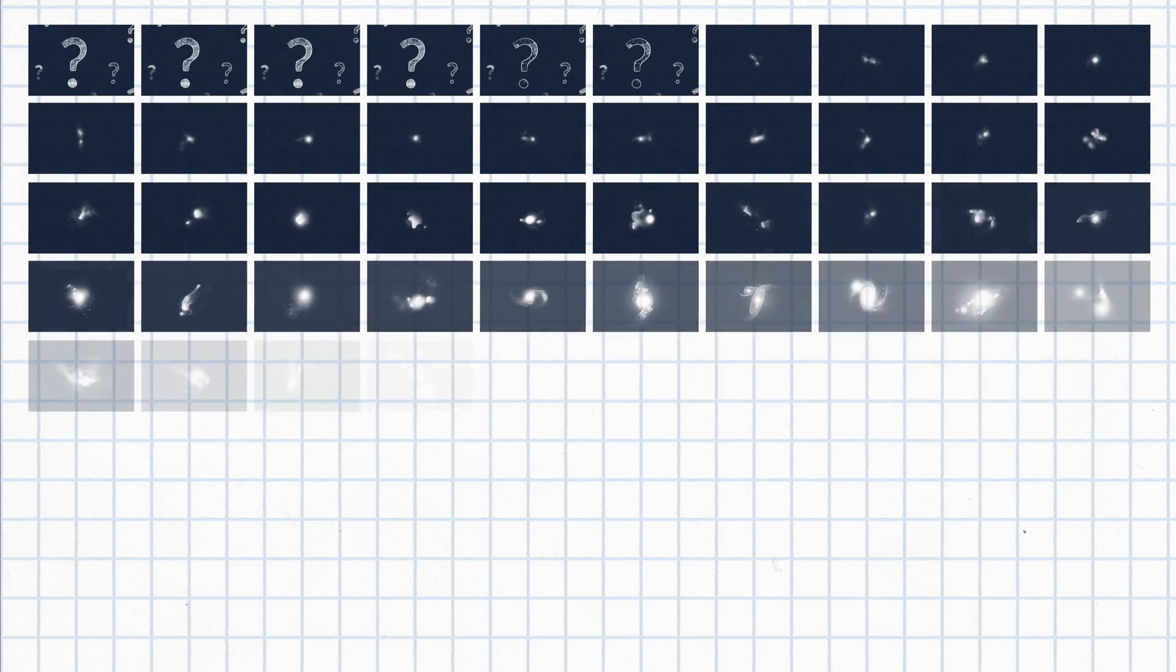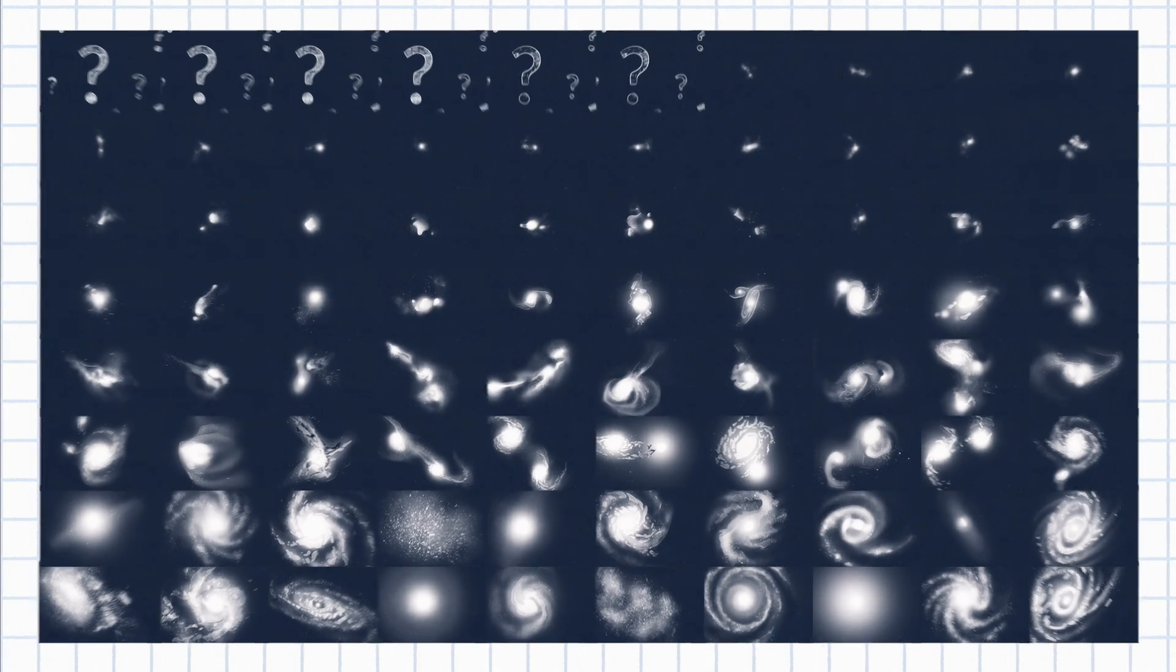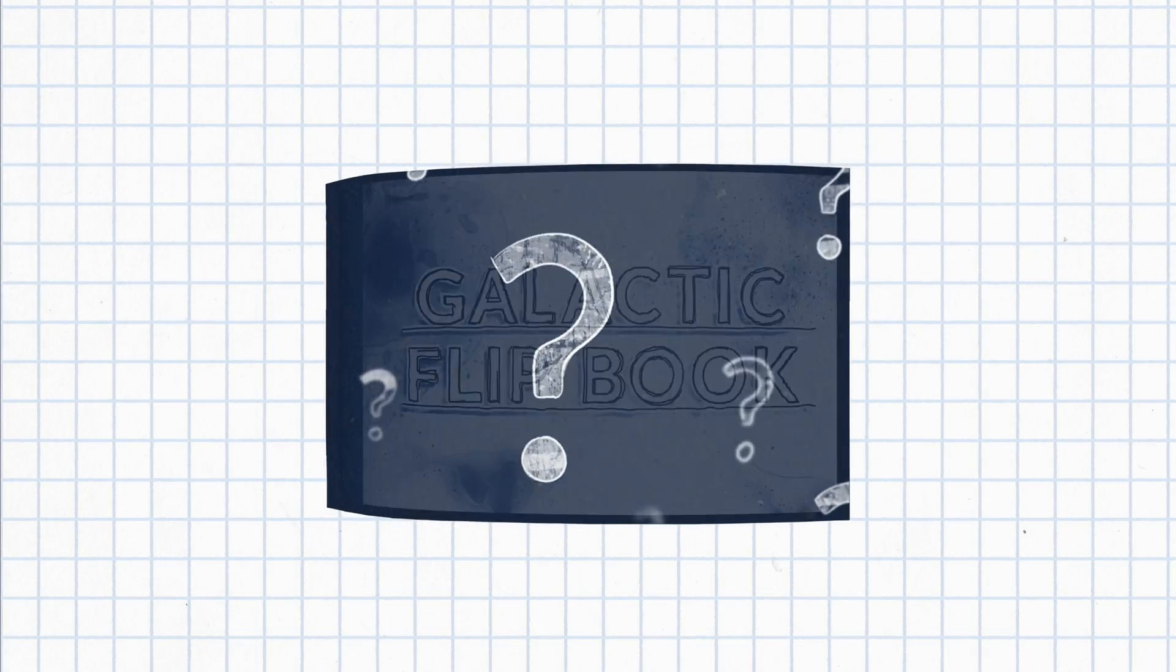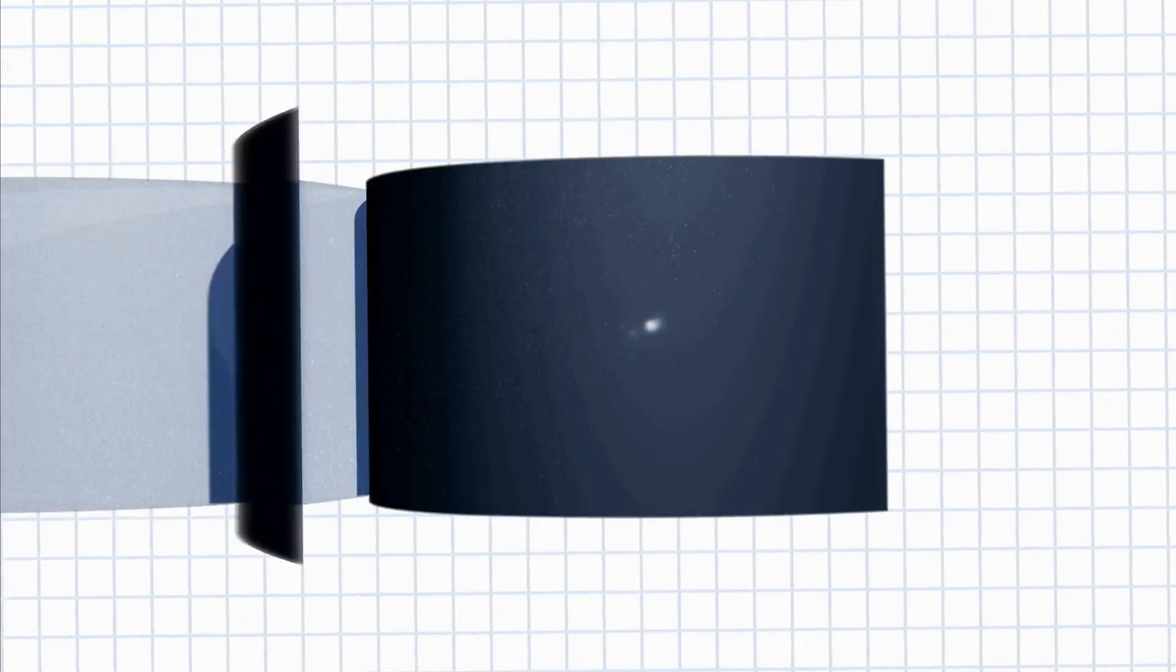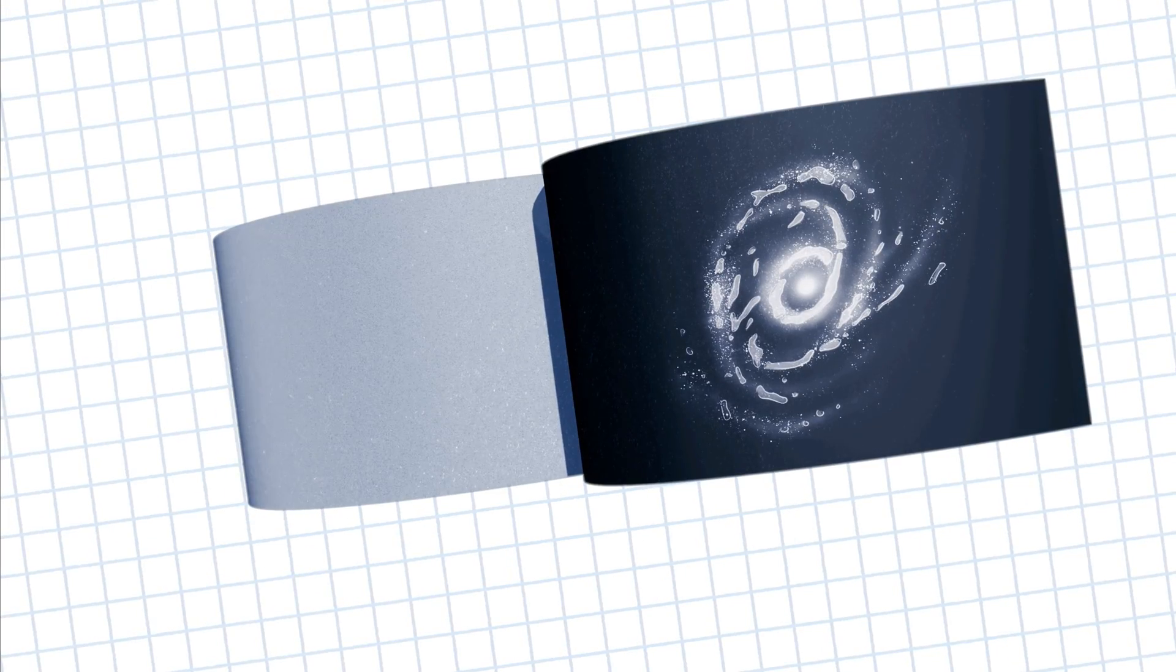Using images of many different galaxies throughout the history of the universe, astronomers can assemble something like a galactic flipbook. Patterns emerge. Some eras were big for mergers and new star formations. While during others, astronomers see trends for growth into larger galaxies with supermassive black holes at their centers.